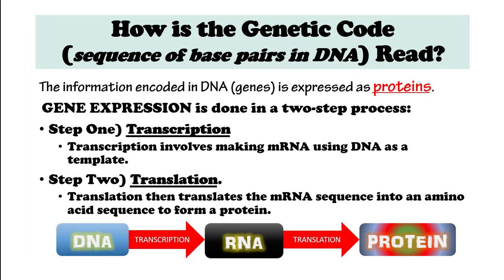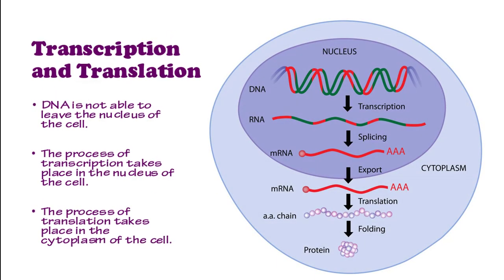How is the genetic code read? The information encoded in DNA is expressed as proteins. Gene expression is done in a two-step process. Step 1 is transcription, which involves making mRNA, or messenger RNA, using DNA as a template. Step 2 is translation, which translates the mRNA sequence into an amino acid sequence that forms a protein. DNA is not able to leave the nucleus, so transcription takes place in the nucleus. Translation takes place in the cytoplasm of the cell.